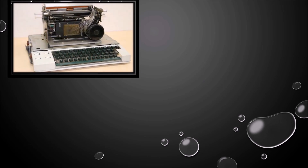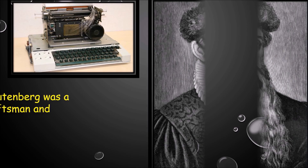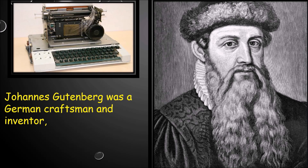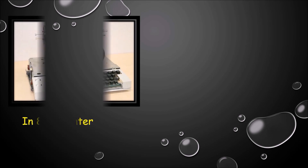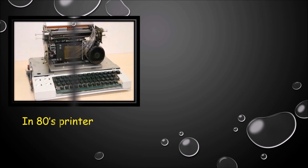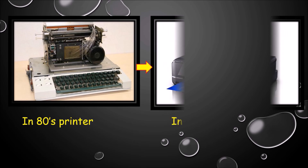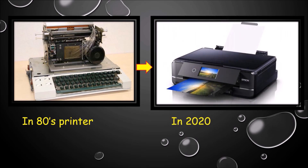Our next invention is printer. Printer is basically used to take printouts from a device. The first printer was invented by John Gutenberg, who was a German craftsman and an inventor. In the 80s we used this type of printer, and in 2020 we are using many other devices including laser printers.